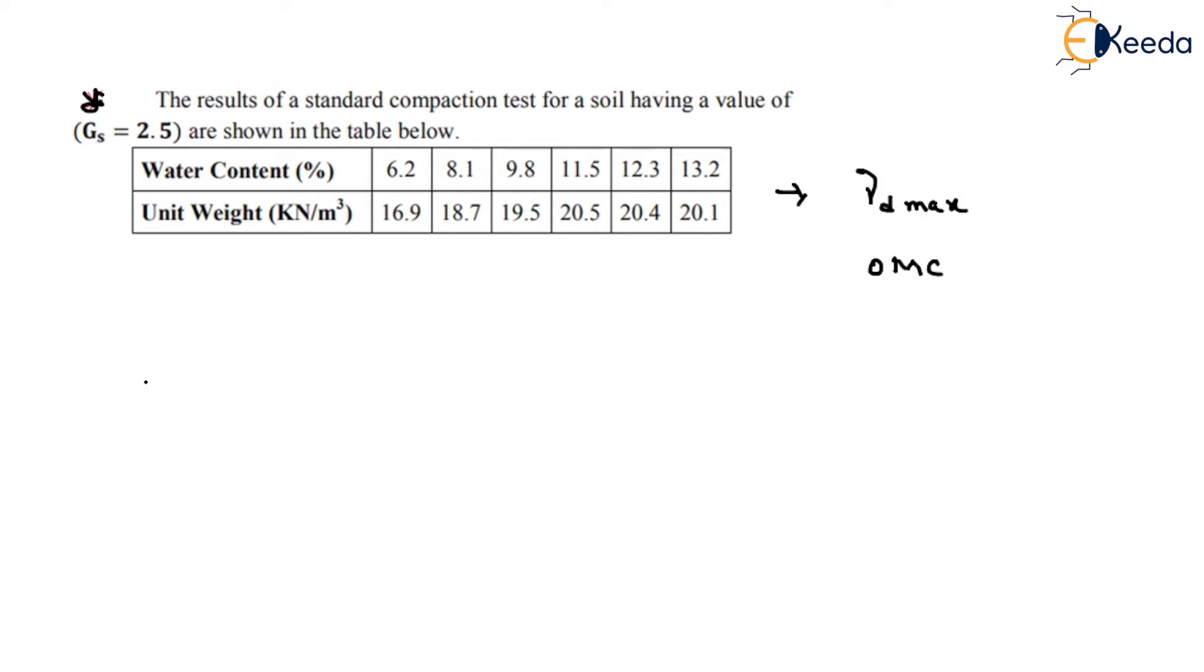How does the graph vary in general? As you are increasing the water content, your dry density also increases until, after reaching some point, the dry density again will start decreasing. So you have to take at what point or moisture water content you are getting the maximum dry density.